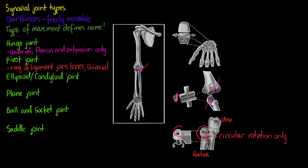Now our ellipsoid or condyloid joints feature a bone with an oval-shaped surface that articulates with a bone that has a complementary depression. This type of joint is multi-axial and allows many types of movements, including flexion, extension, abduction and adduction, and also circumduction.